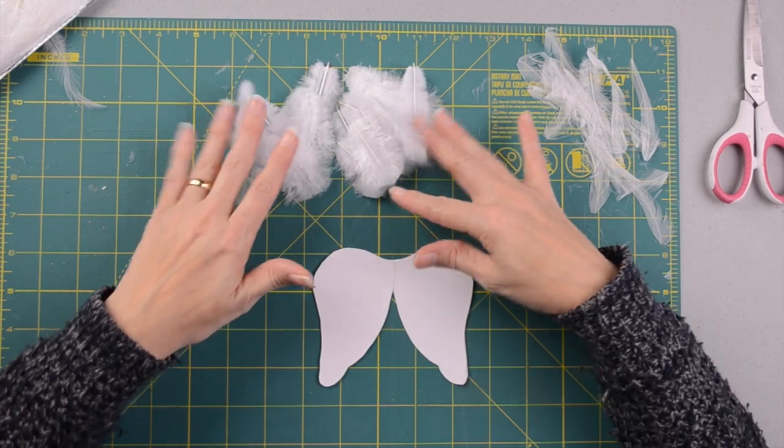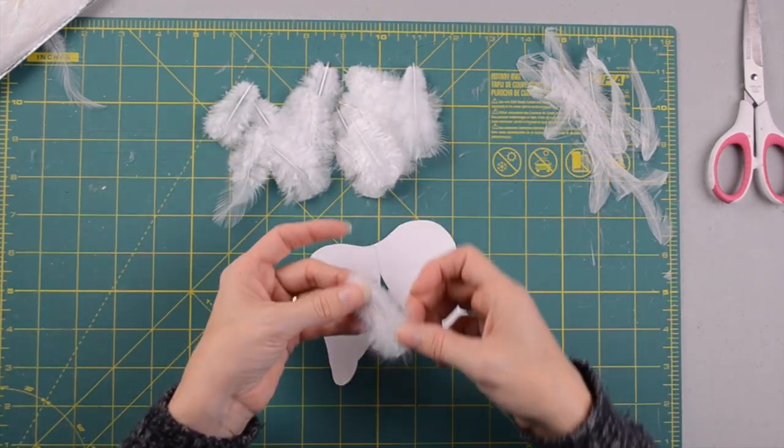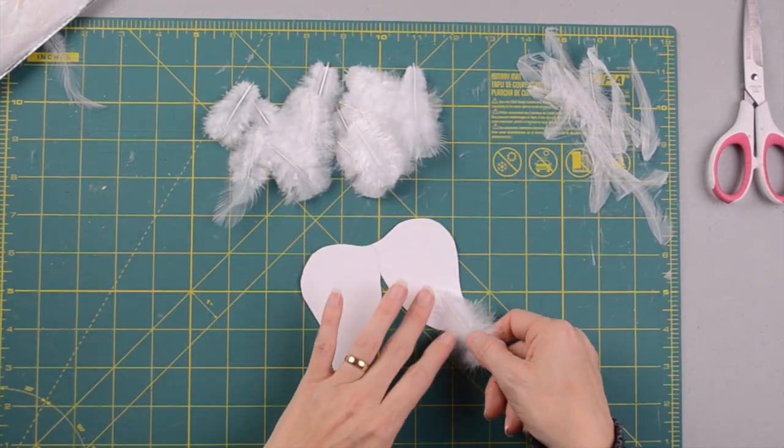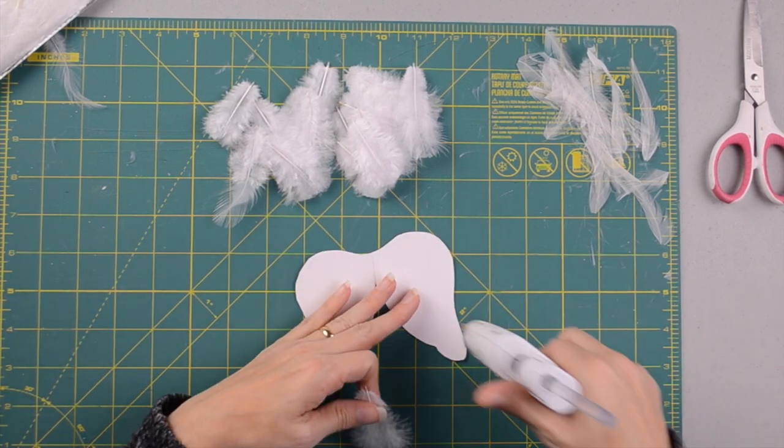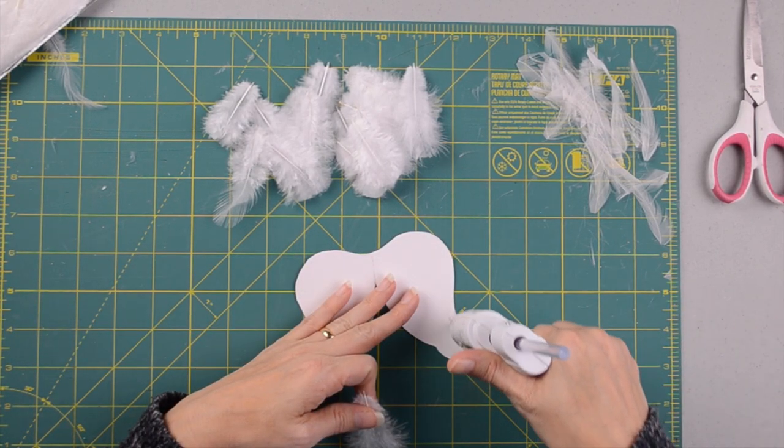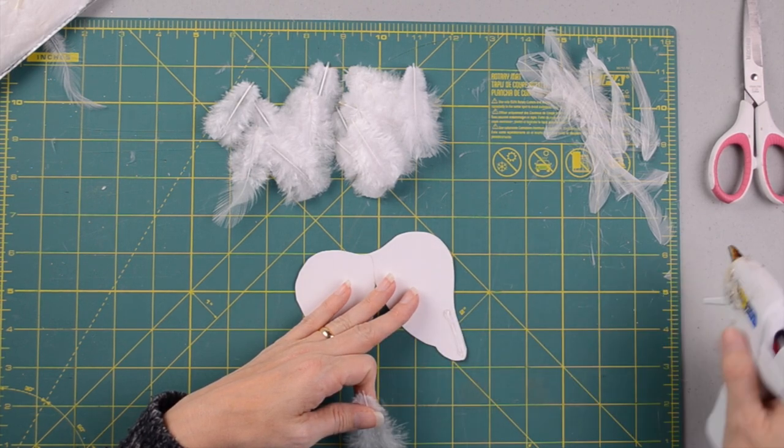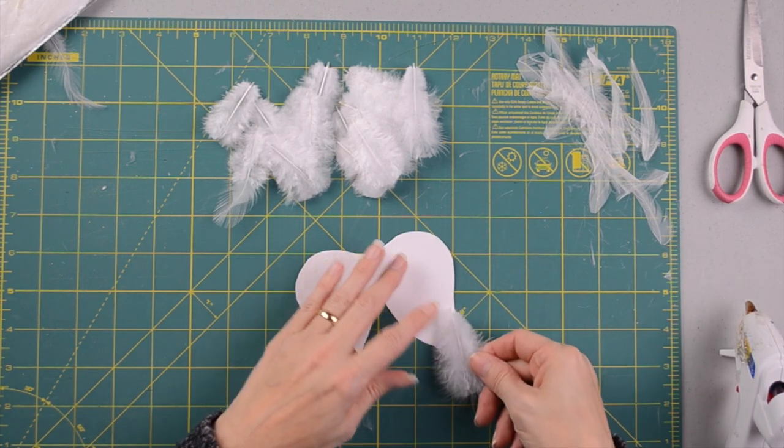Okay, so now that I have some of my feathers cut out, I'm going to go ahead and start hot gluing them onto my little wings. And you want to kind of layer them.